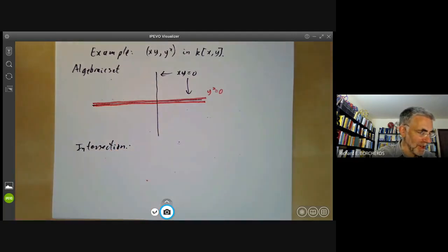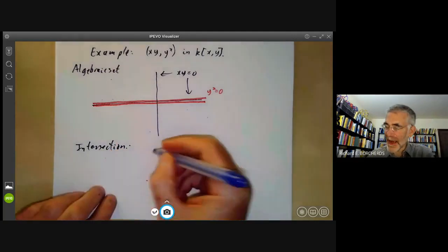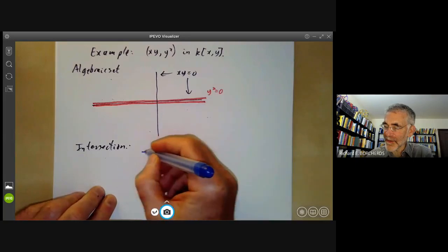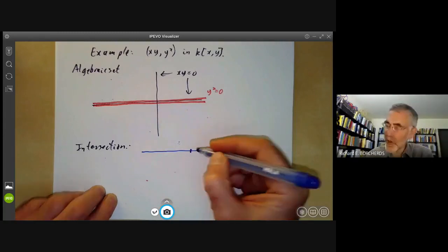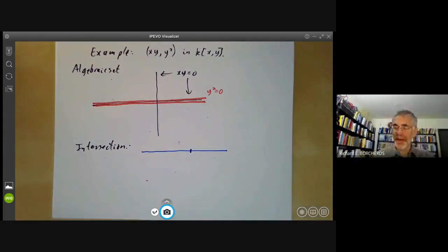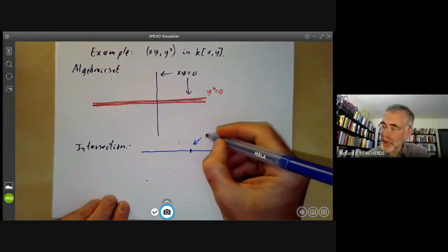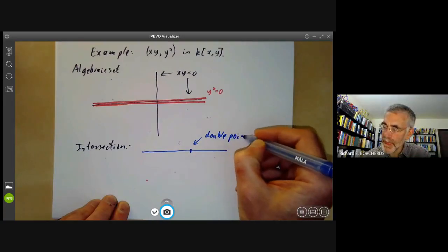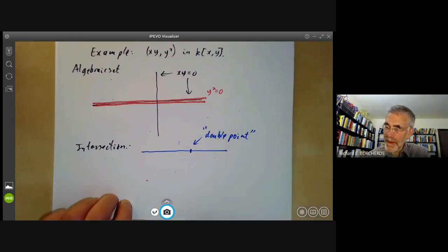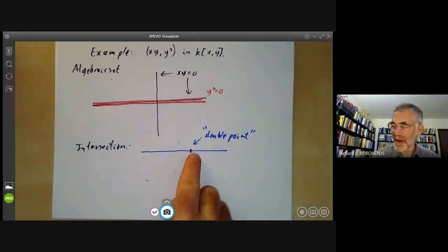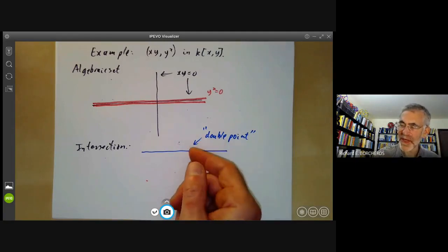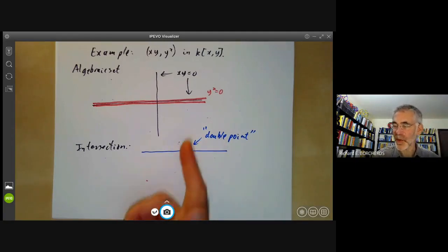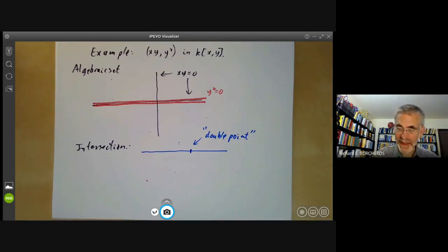So the intersection of these two sets is going to look like the x-axis, except near the origin you should think of it as being slightly thicker. It's got a sort of double point here. Now strictly speaking this doesn't really make sense because a double point in affine two-space is really the same as a single point, but informally we should think of this point as sticking up an infinitely small distance along the y-axis.